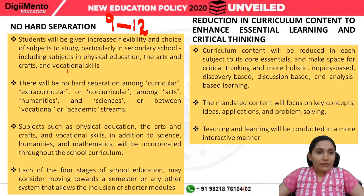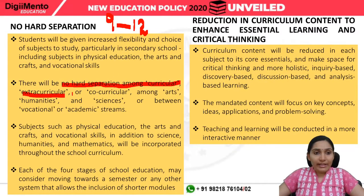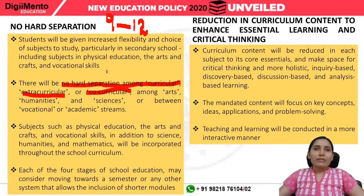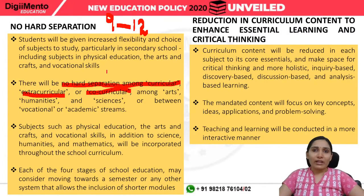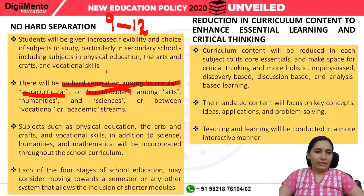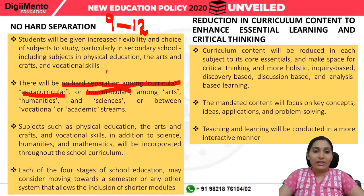There will be no hard separation among curricular, extracurricular, or co-curricular activities, nor among arts, humanities, science, etc. Equal importance will be given to extracurricular and co-curricular activities. Subjects like physical education, arts, crafts, and vocational skills will be incorporated throughout the school curriculum.